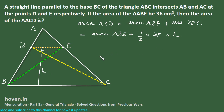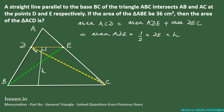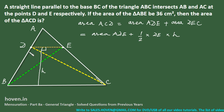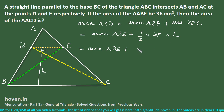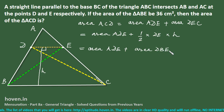Now, if you observe the figure carefully, the area of triangle DBE is also the same, because the base DE and the height H are the same for triangle DBE as well. So the formula — base DE and height H — applies equally to both DEC and DBE.